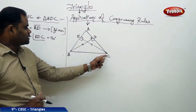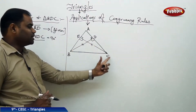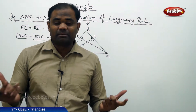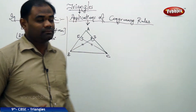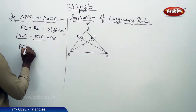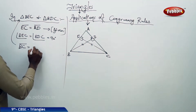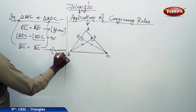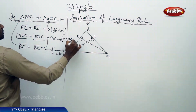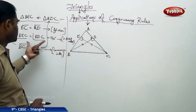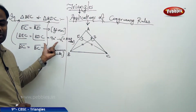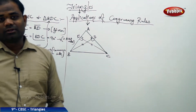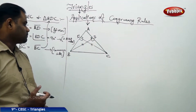The side BC is the common side for both triangle BEC and triangle BDC, and hence they must be equal to each other — equal to itself. So BC of triangle BEC equals BC of triangle BDC since it is the common side. It is important to write the reason: the angles are 90 degrees because they are altitudes, EC equals BD because it is given, and BC equals BC because they are common sides.